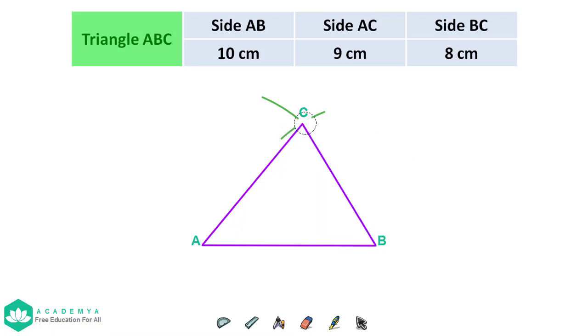Now you can erase the arcs and get the triangle ABC.